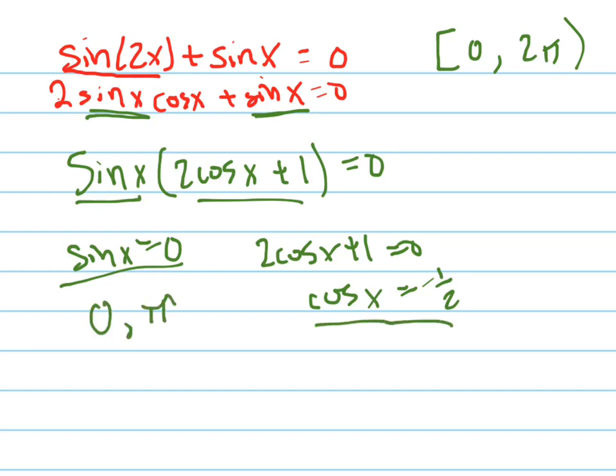And where does the cosine of x equal negative 1 half? Again, the cosine is the x coordinate on your unit circle, so where is that 1 half? Is it the 60 degree or 30 degree reference angle?